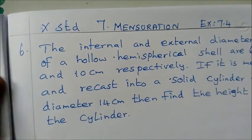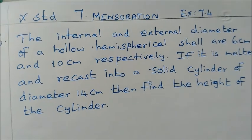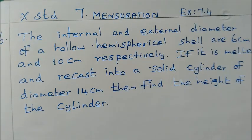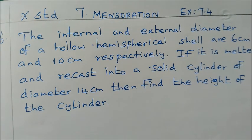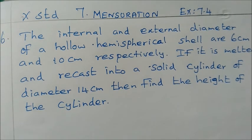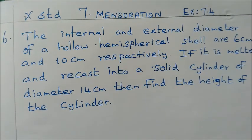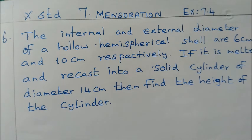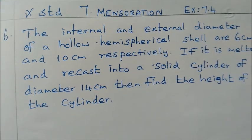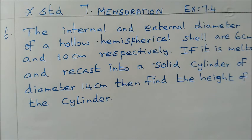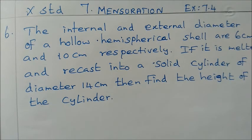This is 10th standard mensuration exercise 7.4, 6th problem. The internal and external diameter of a hollow hemispherical shell are 6 cm and 10 cm respectively. If it is melted and recast into a solid cylinder of diameter 14 cm, then find the height of cylinder.